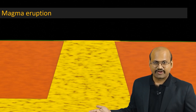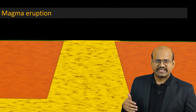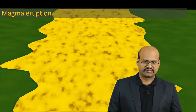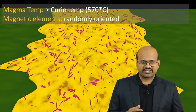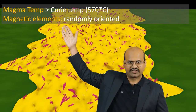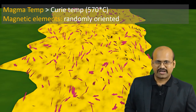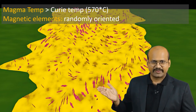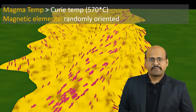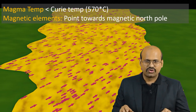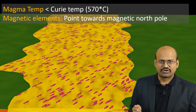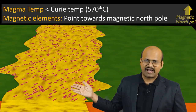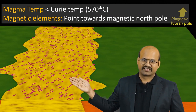So the magma, when it comes from the deeper parts of the earth, is rich in magnetically active elements like iron and nickel. When the temperature of the magma is above the Curie temperature, the magnetic elements in the magma are randomly oriented — that is, they point in random directions. But as the magma starts to cool down and the temperature comes below the Curie temperature, the magnetic elements align themselves to the magnetic field in the region; in other words, they point towards the magnetic pole.